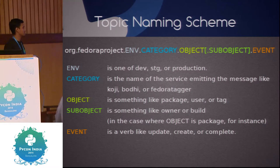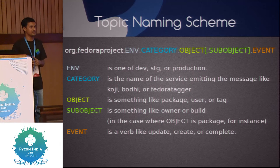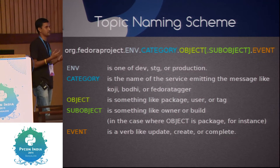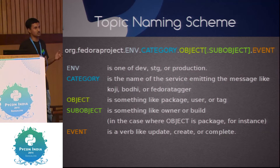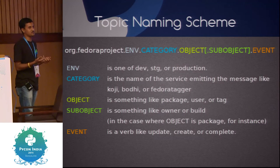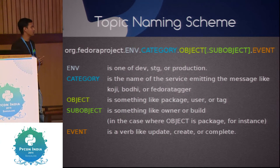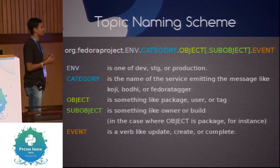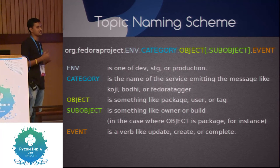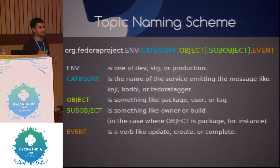Then we have the object — which particular object did that particular activity. Object is something like a user or a tag. For example, we are building a project called AutoCloud which does image testing — we name the object 'image' since the work is being done on an image. Sub-object is optional additional data about the object. Then we have the event — what action is being performed, such as update, create, test running, test failed, and so on.